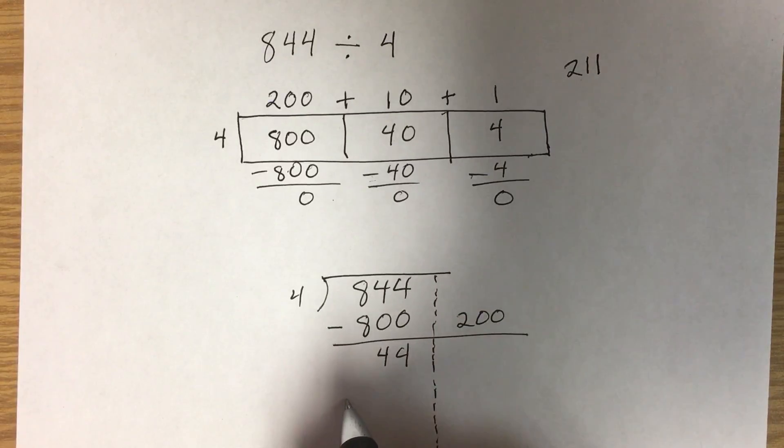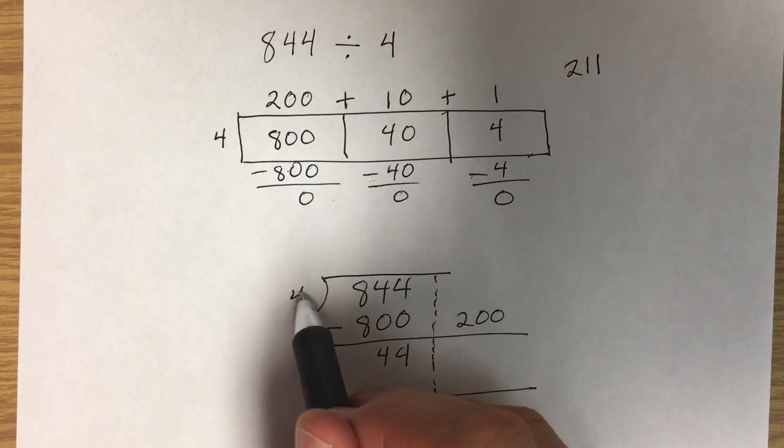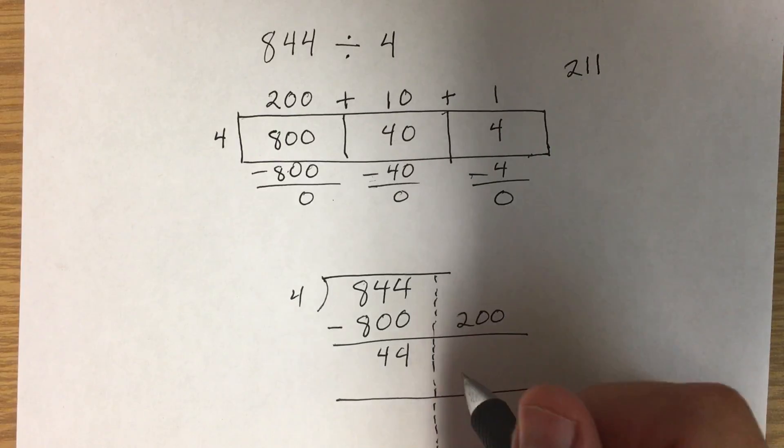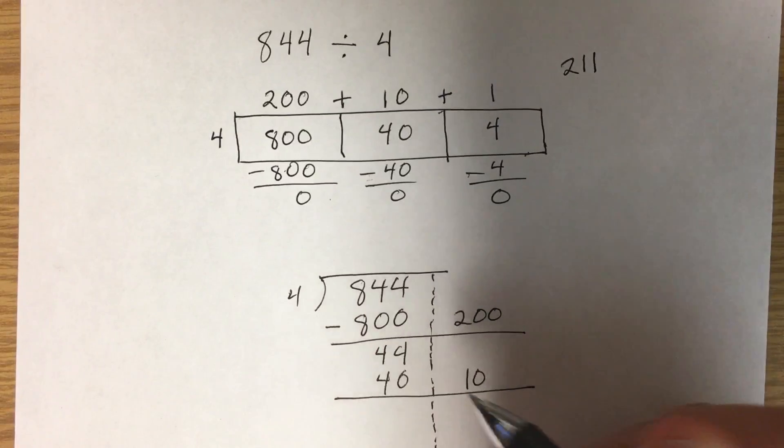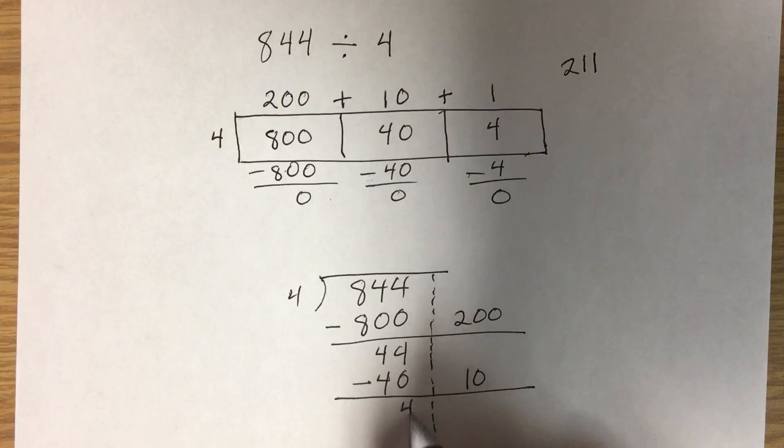Here we're going to do the same thing again. We're going to say how many tens times 4 can fit into 44. So 10 times 4 equals 40, and that will fit into 44. Then we subtract and there's only 4 left.